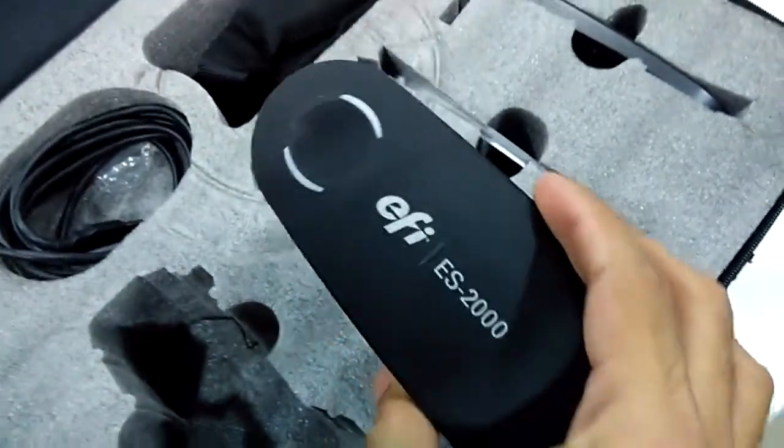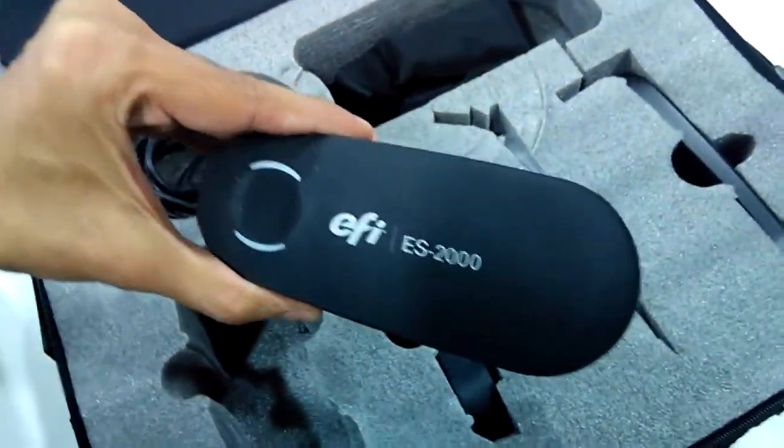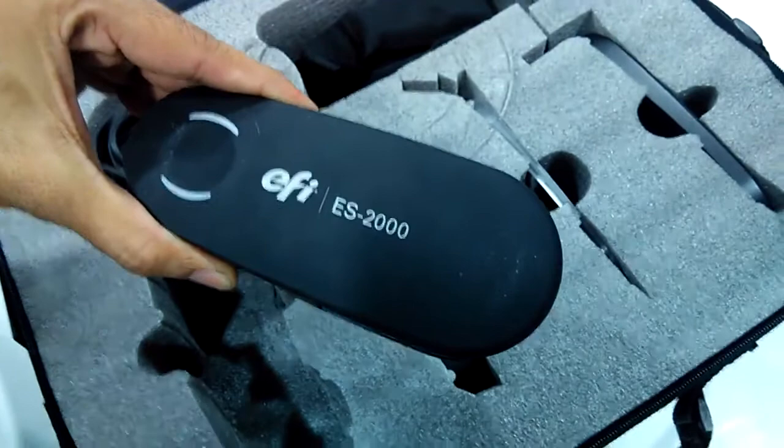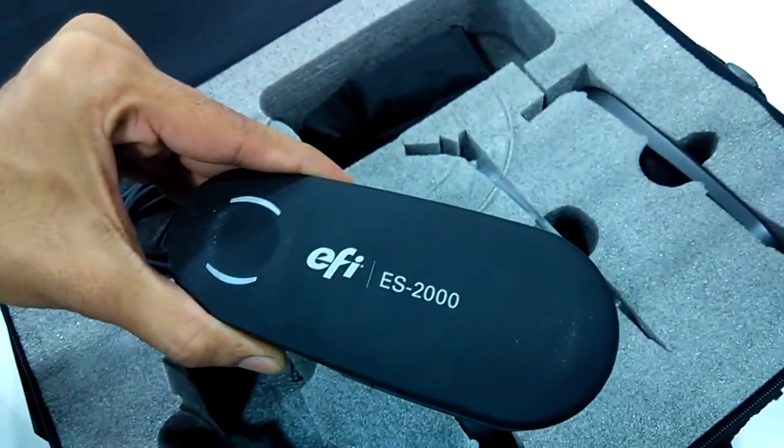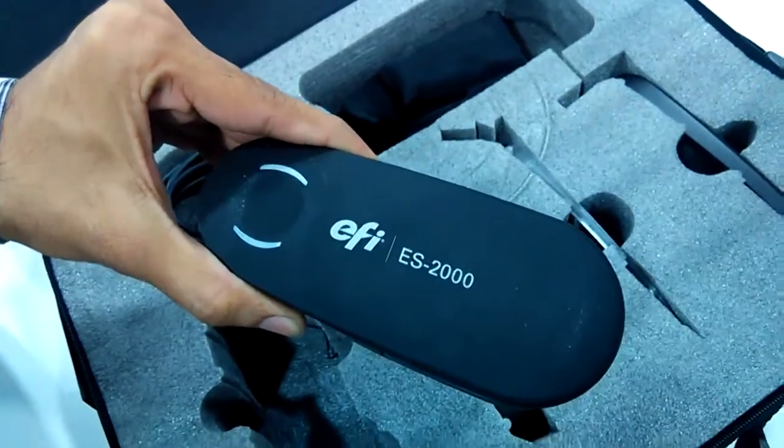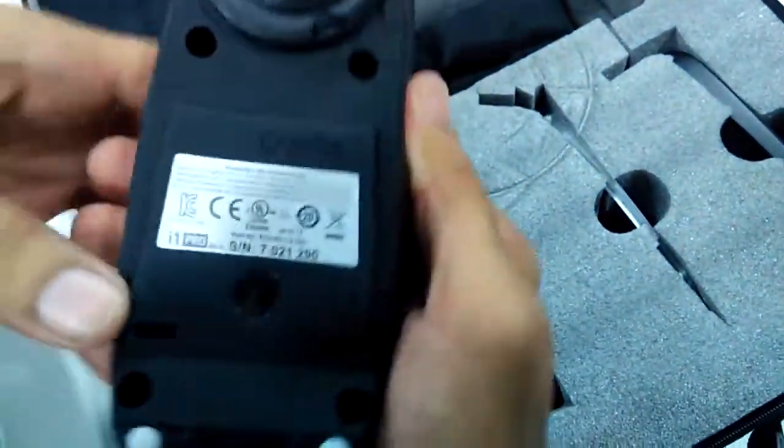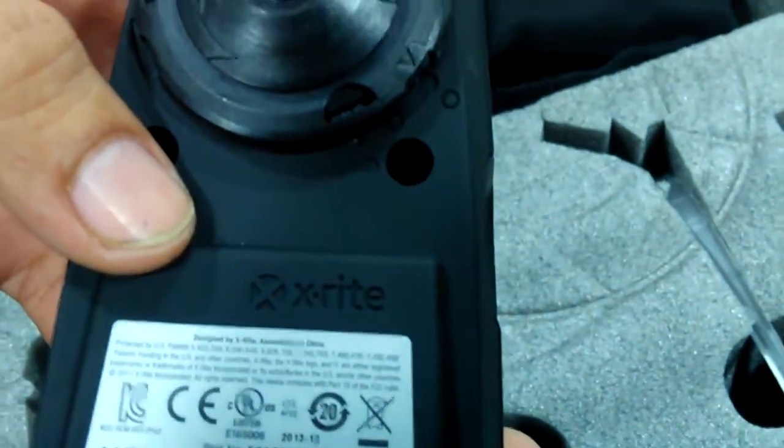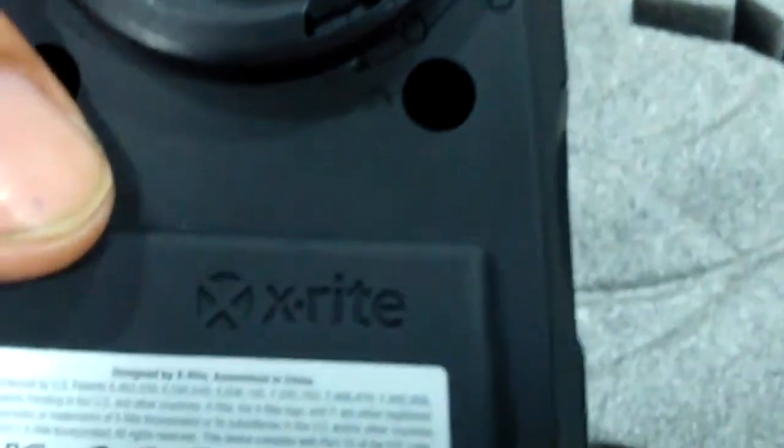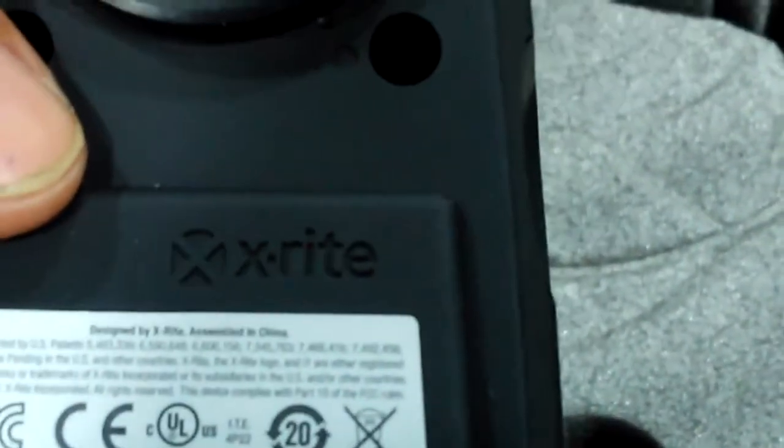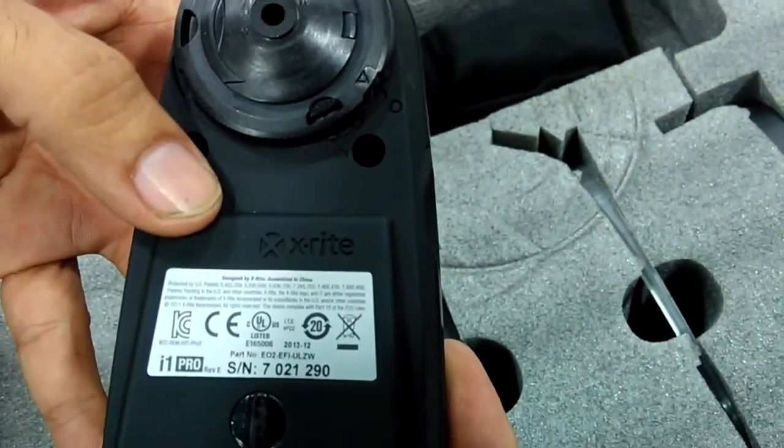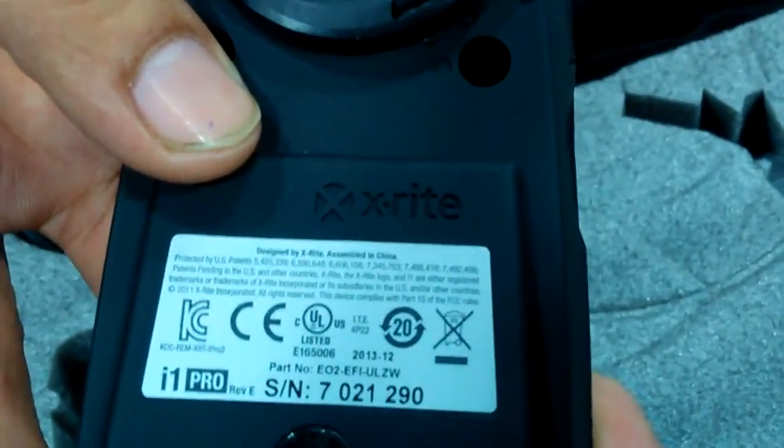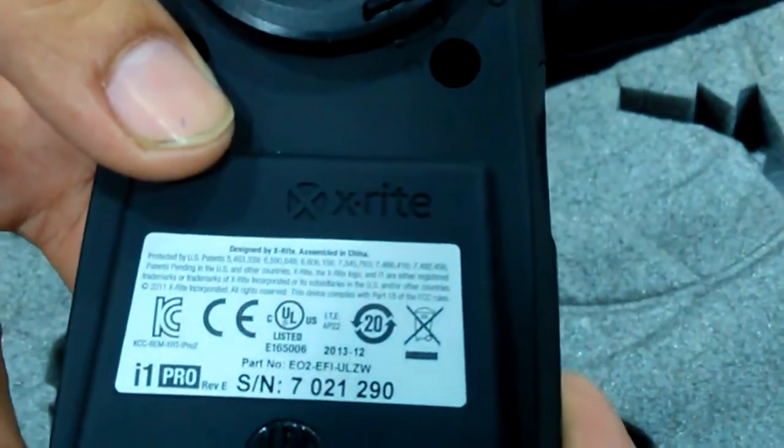On top of it, you can see that it has been branded as EFI ES2000. For your reference, I will show you once again the X-Rite brand name inside below the device. So you can be rest assured that this is an X-Rite manufactured product, worldwide known as i1 and i1 Pro.